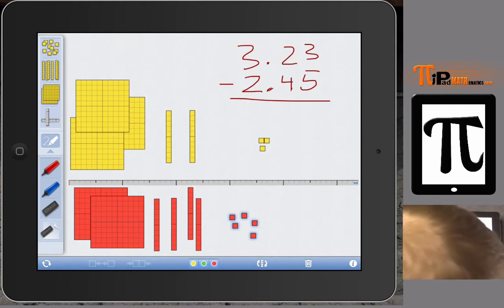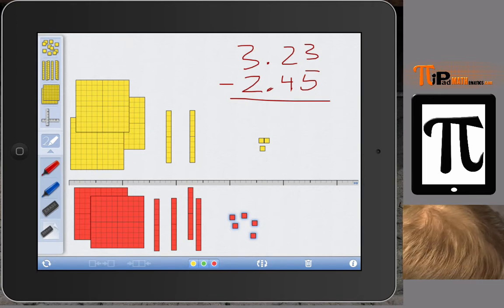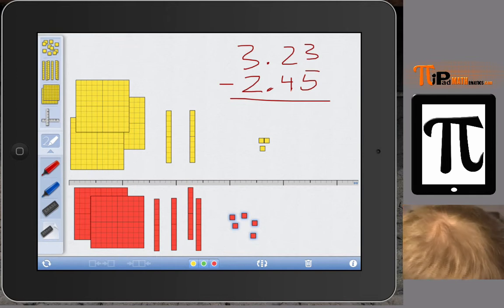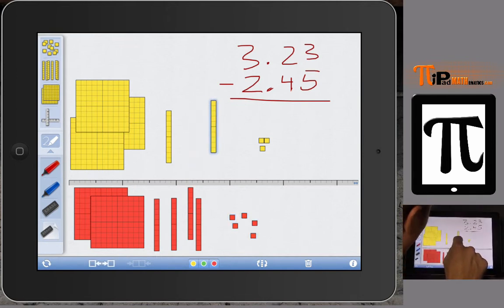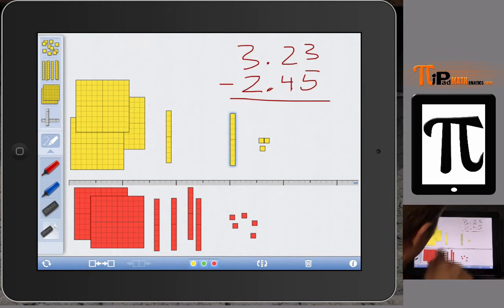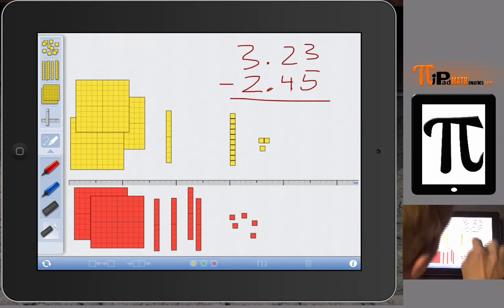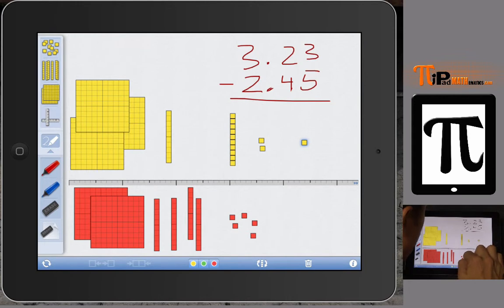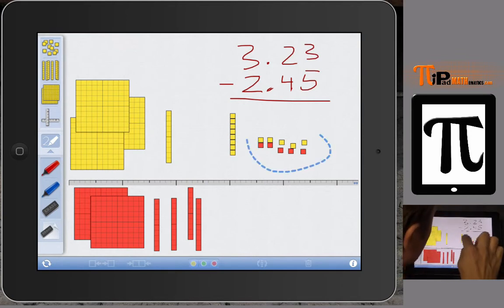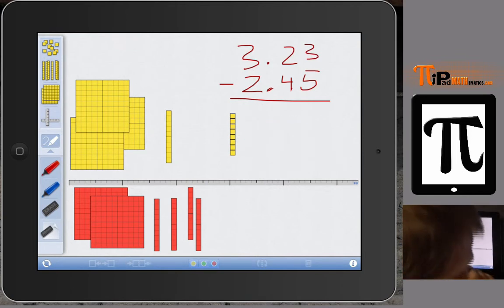So we have 3 hundredths here and we need to subtract 5 hundredths from it. We don't have enough. We don't have enough to subtract 5 from 3. So we're going to need to exchange. We're going to exchange one of these tenths and break it up into 10 of our hundredths. So that now we have enough for every one of our positives to pair up with one of our negatives.